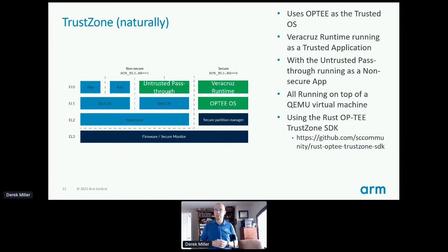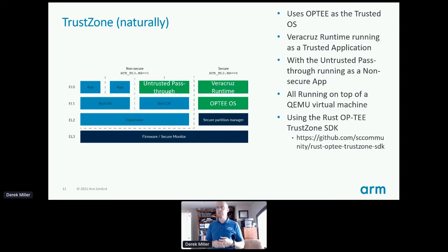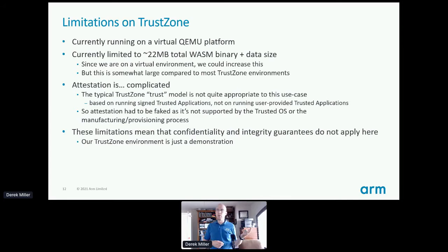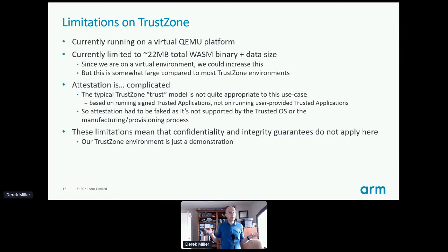One important caveat: right now we're running on top of a QEMU virtual machine, so this is not a real hardware platform. For our TrustZone Rust support we use the Rust OP-TEE TrustZone SDK, which cut a lot of time off our development — it was very useful for getting things up and running with Rust. However, because we're running on the virtual QEMU platform, we don't have any security promises at all — this is just a demonstration platform. Inside the secure world we're limited to approximately 22 megabytes of total WebAssembly binary plus data size. We could increase this easily, but to be fair this is quite large compared to most TrustZone environments.